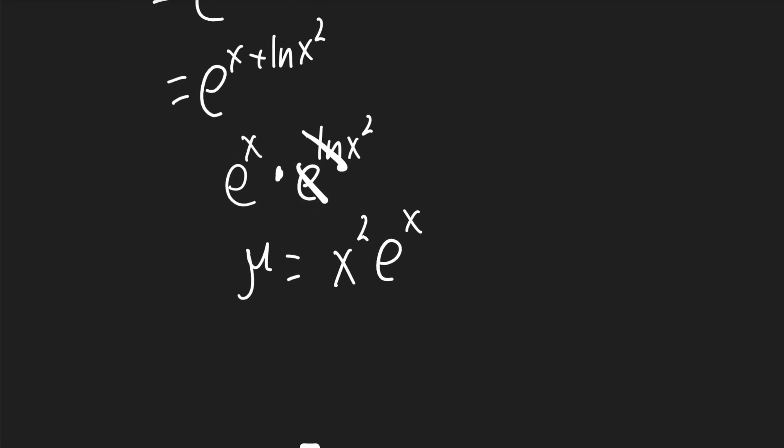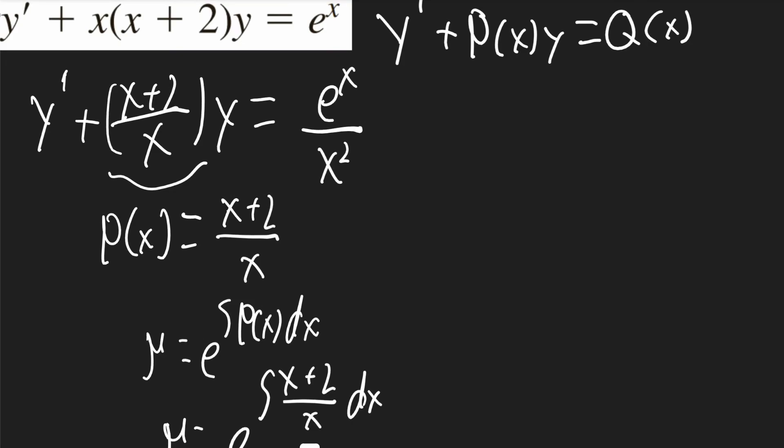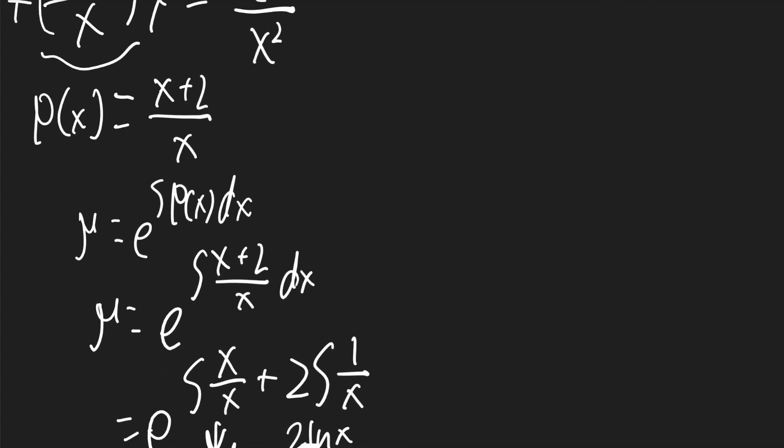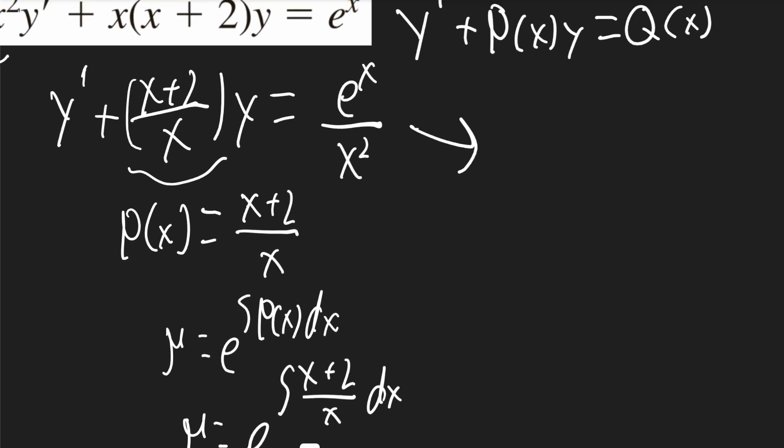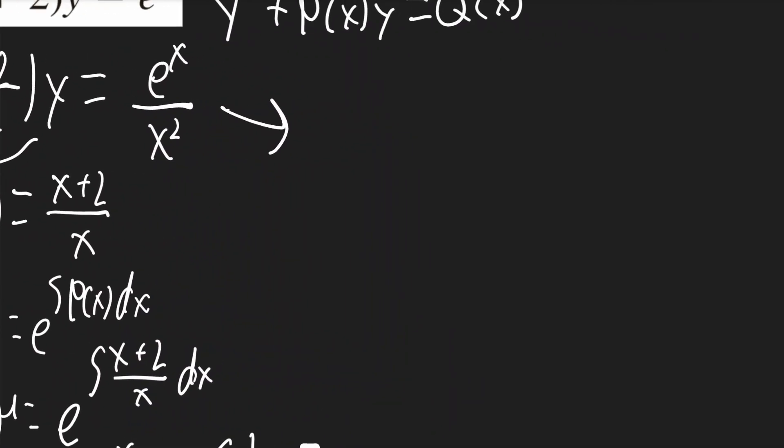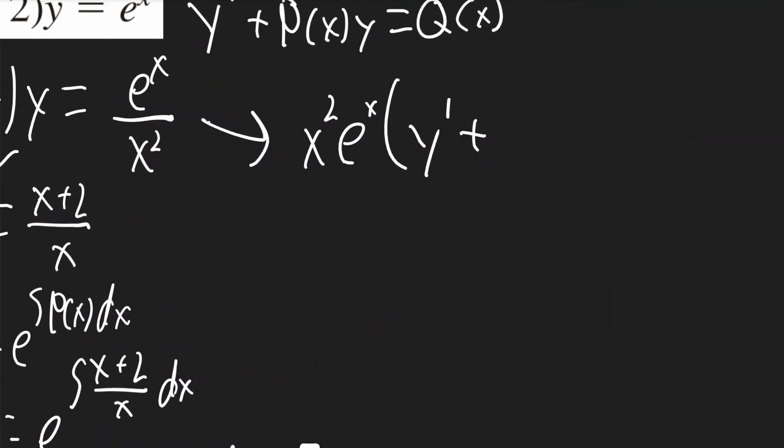Now we multiply that with the original function up here. It'll be this one. It'll be x squared e to the x times y prime plus x plus 2 over x times y.